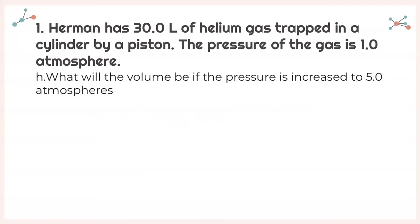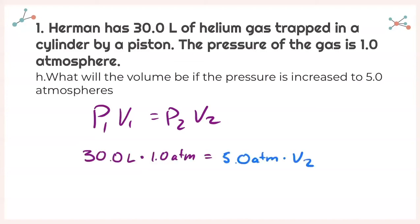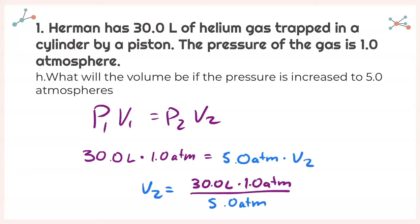Last part of number 1: what will the volume be if the pressure is increased to 5.0 atmospheres? Same equation: P1 times V1 equals P2 times V2. Plugging in everything — we are given our second pressure, so just plug that in. Isolating V2 and plugging all of that into our calculator, we get 6.0 liters.